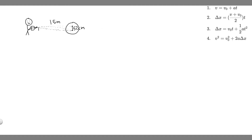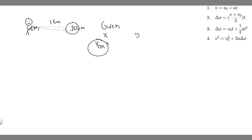The first thing to do is write down the givens. Since this is a two-dimensional kinematics problem, write down the variables in the x-direction and y-direction separately. We're trying to find the initial speed of the arrow. Because the arrow is fired horizontally, there's only a horizontal velocity component — so the initial velocity in the y-direction is zero meters per second.